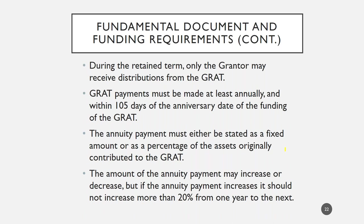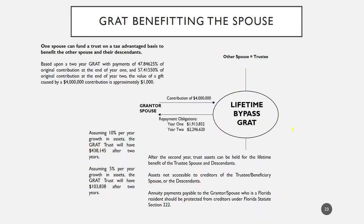The GRAT payments can be level or backloaded — meaning payments increase by 20% each year. It generally works better to have payments increasing by 20% each year because it allows more appreciation to accumulate in the GRAT during the early years of the term, passing more wealth to beneficiaries.